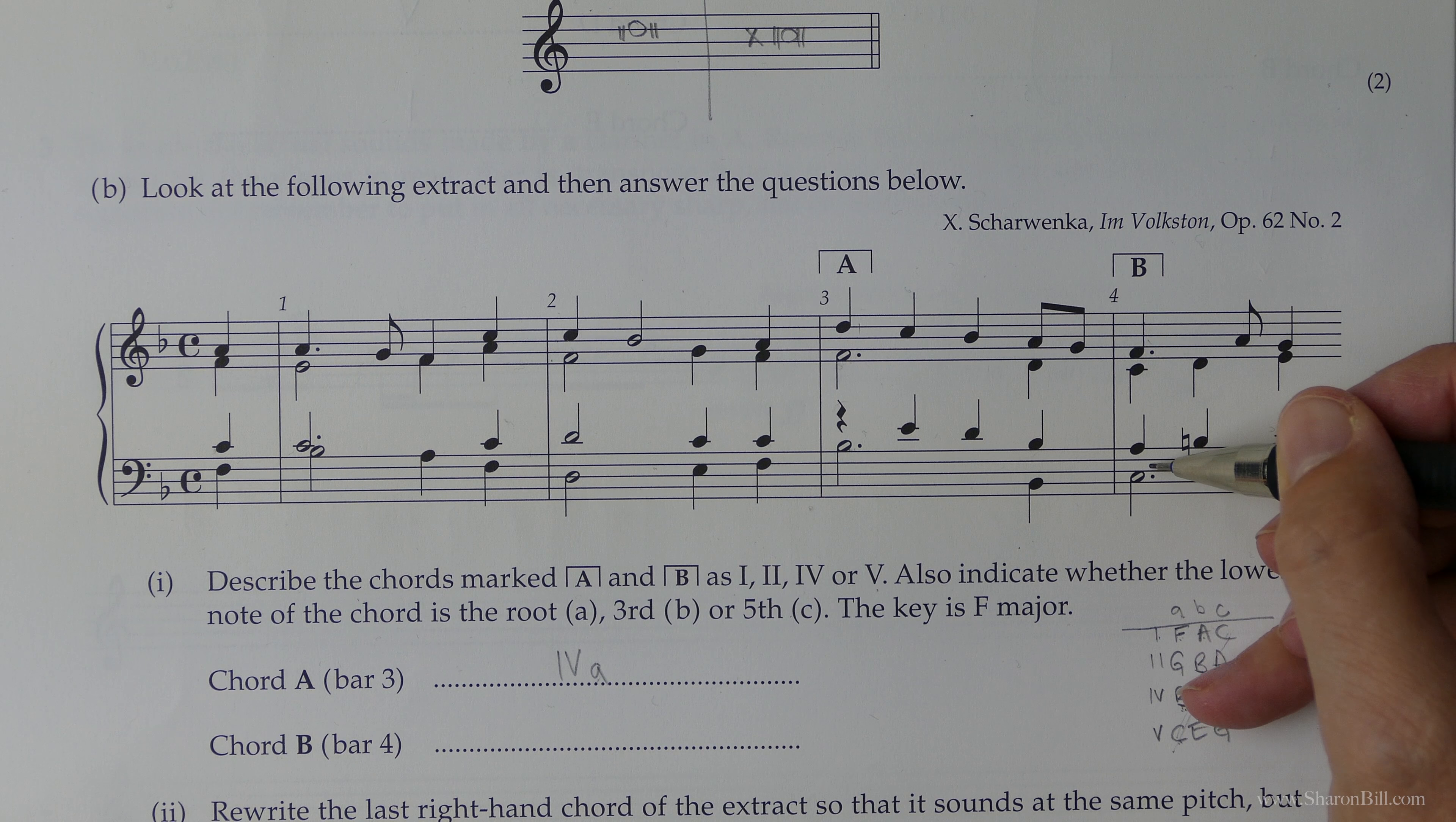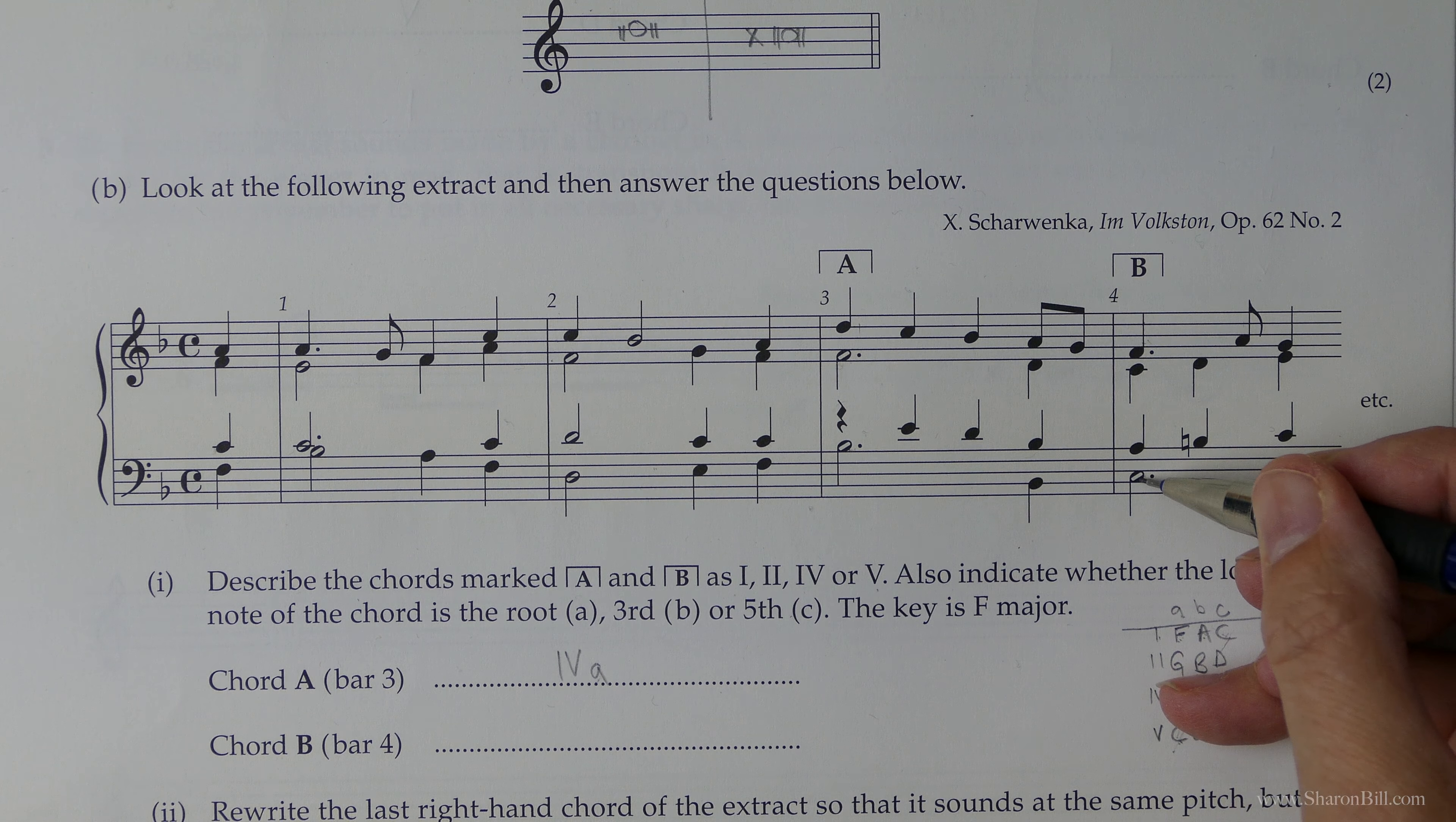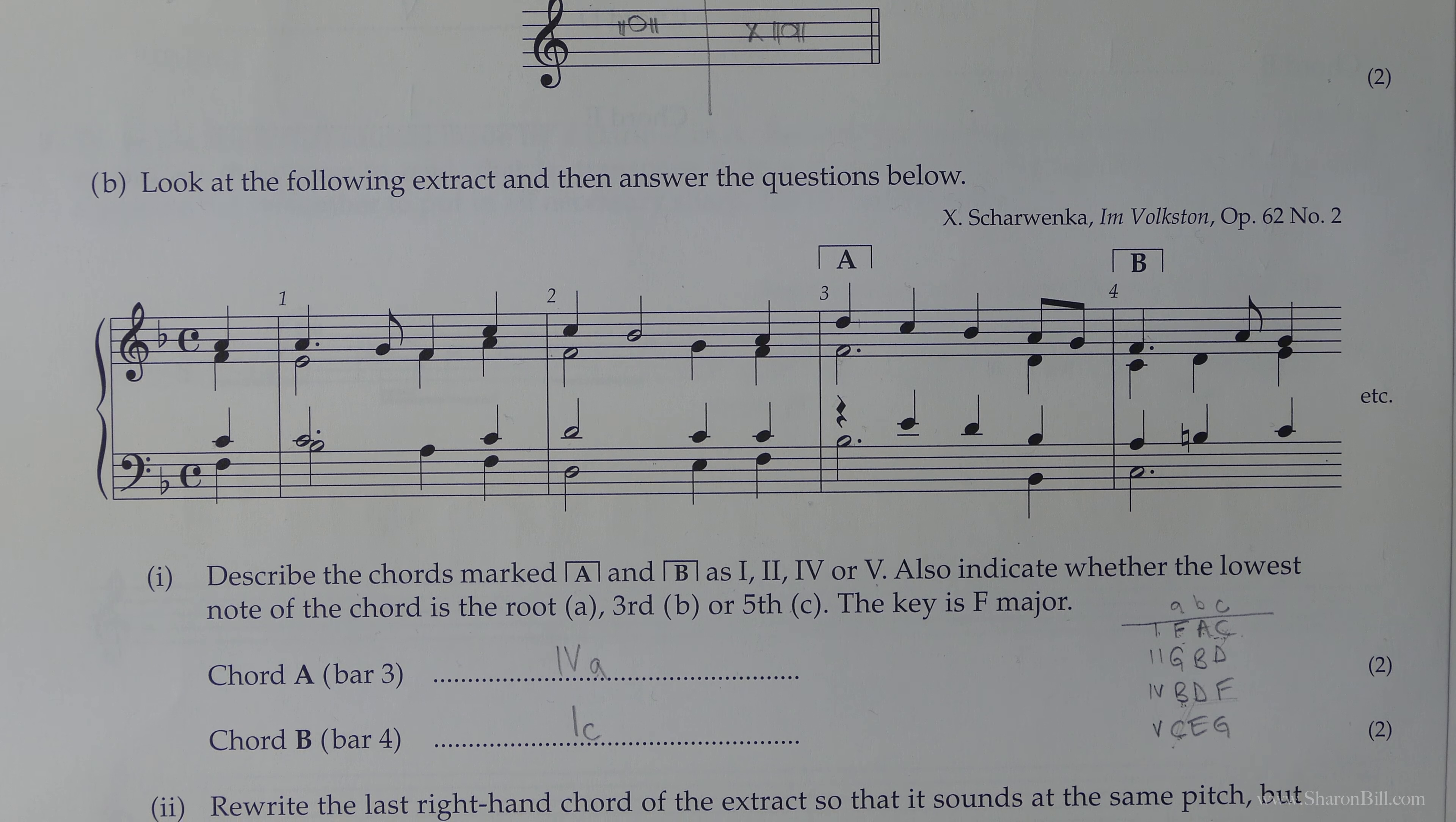So here we go, the next one. So chord B, we've got a C, an A, an F, and a C. So that's chord I, F, A, C. And because the C is in the bass, it's a IC. Because we've got the C at the bass, then we've got F, A, C as the whole notes of the chord. So there we go, that's job done.